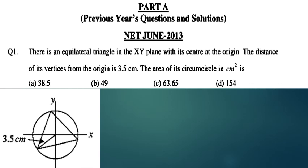The distance of its vertices from the origin is 3.5 cm. The radius of the circle is 3.5 cm, so r equals 3.5 cm.